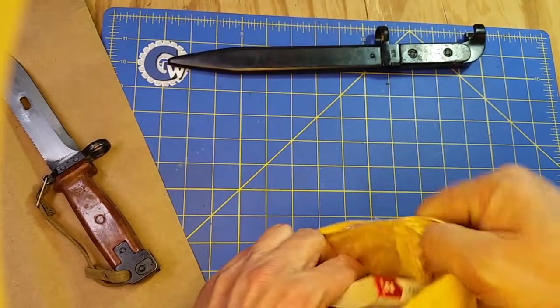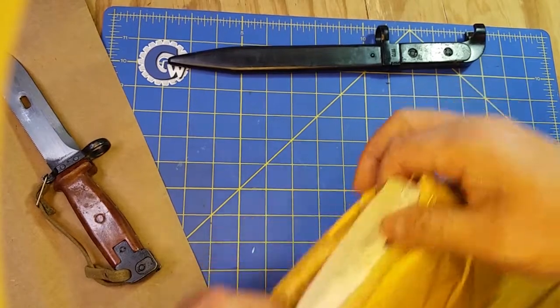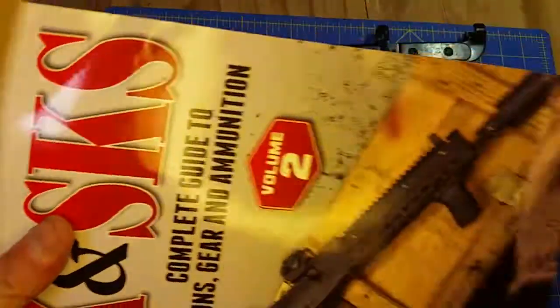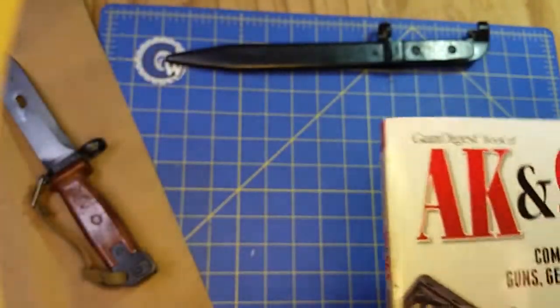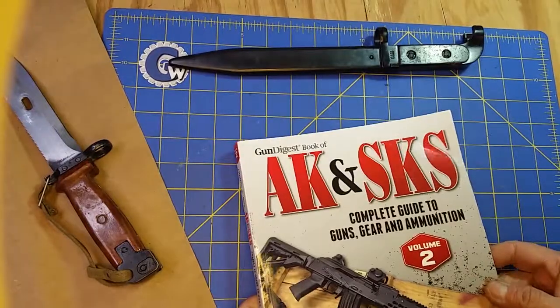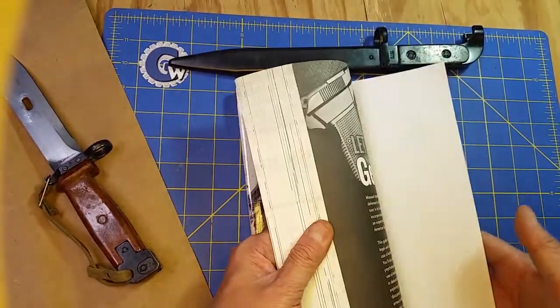This is another book for the Kalashnikov Library. And this is the Gun Digest Book of the AK and SKS, Volume 2.